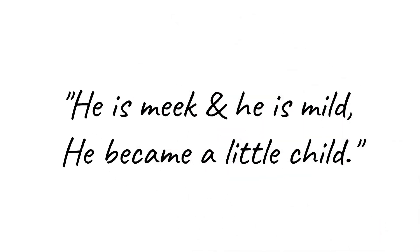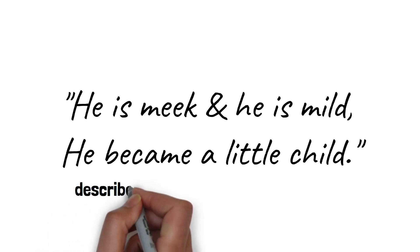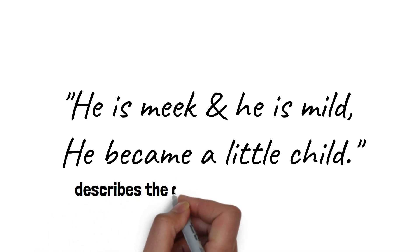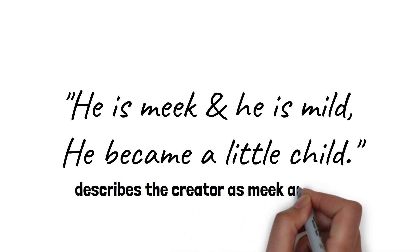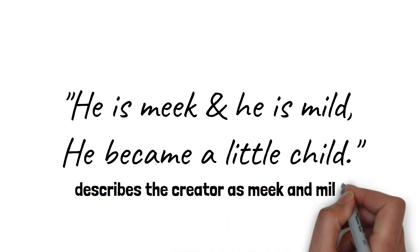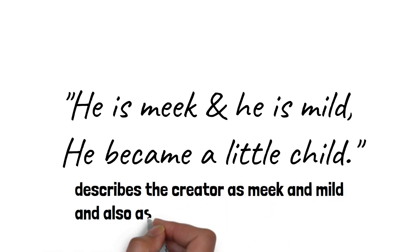He is meek and he is mild. He became a little child. In these next two lines, the speaker describes the creator as meek and mild, and also as a child, further emphasizing the innocence and purity of both the creator and the creature.